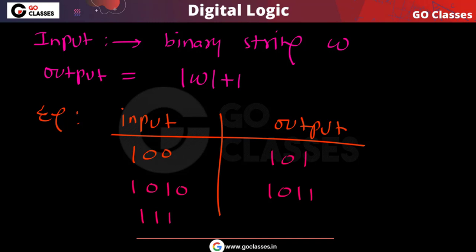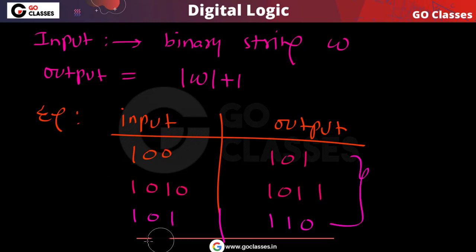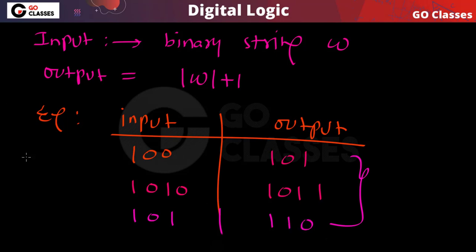Now there is a corner case we will also see. For example, if your input is 1 1 (all ones), then the output should be 1 0 0. We will see that corner case also. But anyway, the target is clear: you should increment by 1.